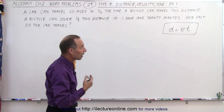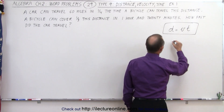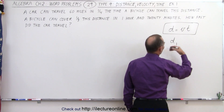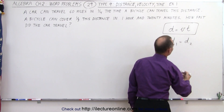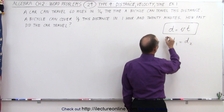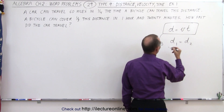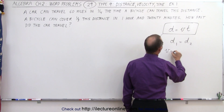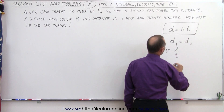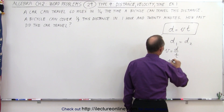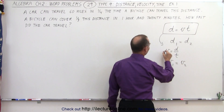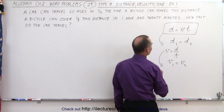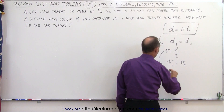Sometimes the problem can be solved by saying that the distance traveled by one mode of travel equals the distance traveled by another. Or sometimes we solve this equation for velocity, so velocity equals distance divided by time, and we can say that velocity one equals velocity two.